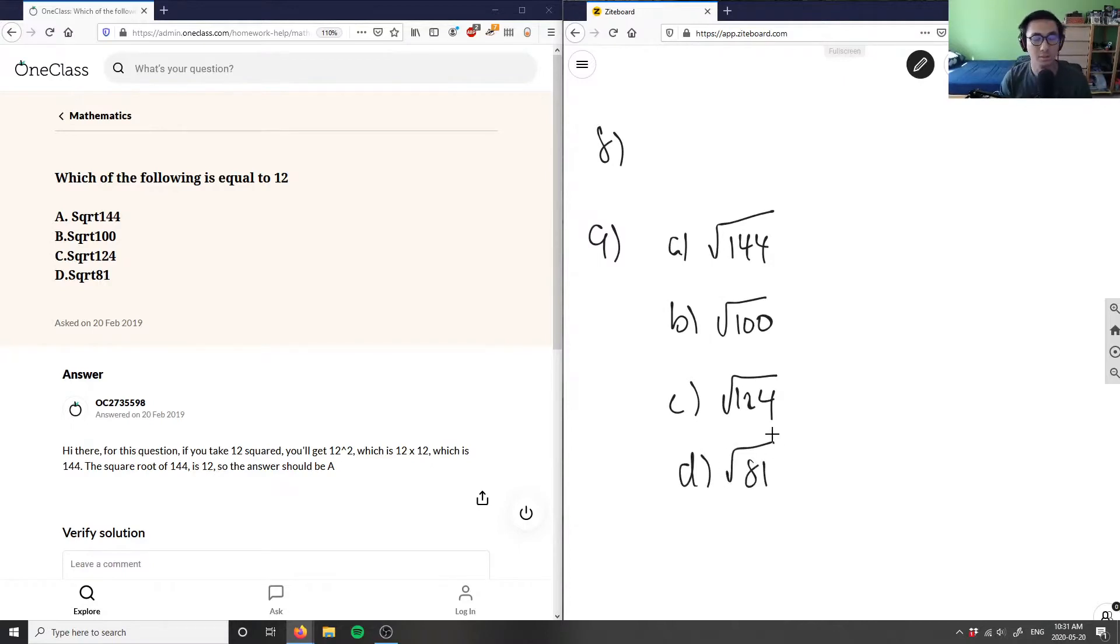Well, right off the bat, what we can do is we can actually get rid of two of these numbers here. We can say that we know two of these square roots. The square root of 100, we know this equals 10, so we can say immediately B is the wrong answer. And the square root of 81 here is equal to 9, and this here is the wrong answer.